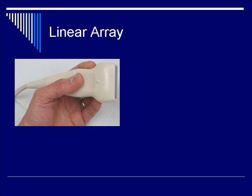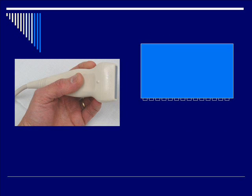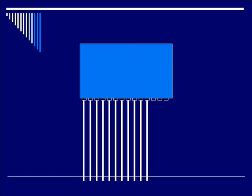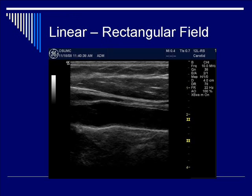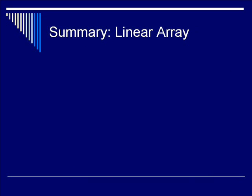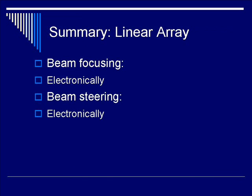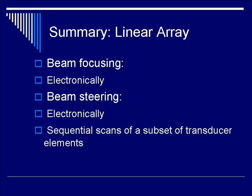This picture is a typical linear array. The cartoon rendition shows a rectangular profile with multiple piezoelectric elements at the surface. You scan each element or group of elements from left to right sequentially to produce a rectangular scan pattern of the soft tissue of interest. This is an example of some surface blood vessels scanned using the linear array. In summary, a linear array has a beam that is focused and steered electronically, done via sequential scans of a subset of transducer elements.